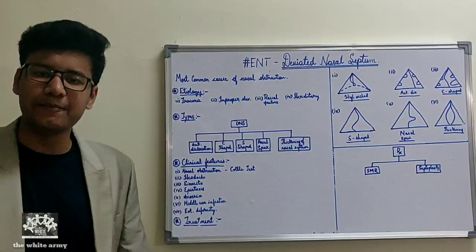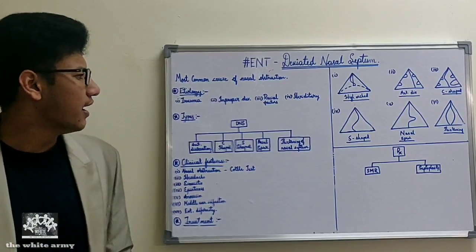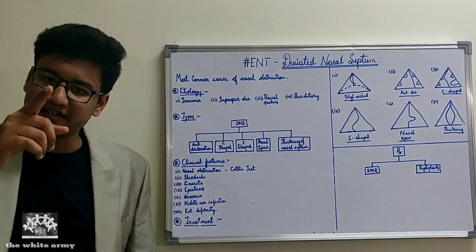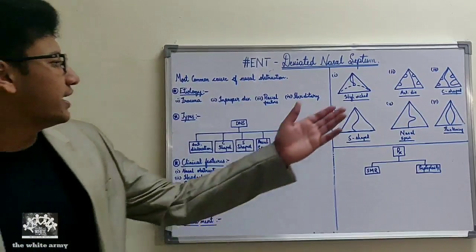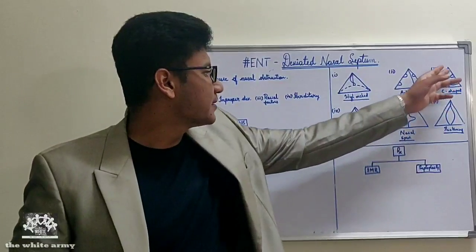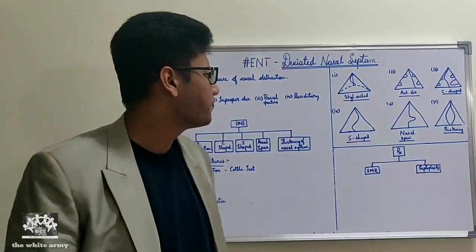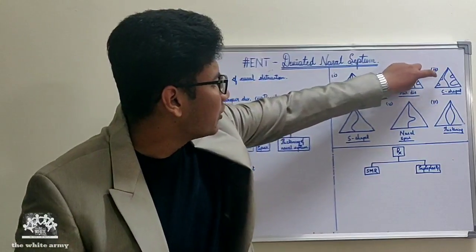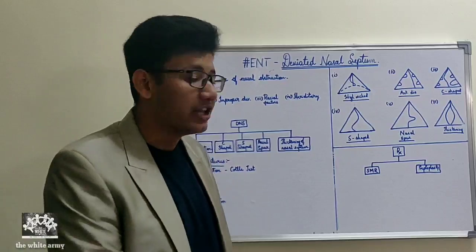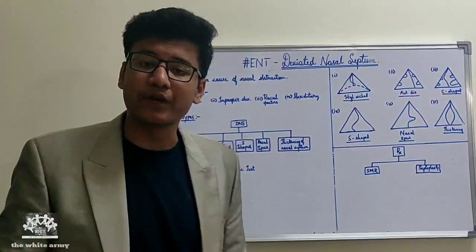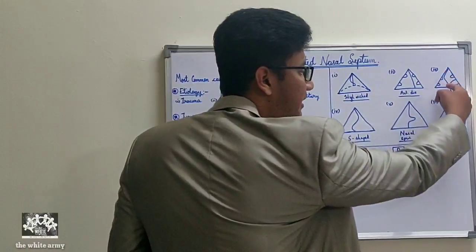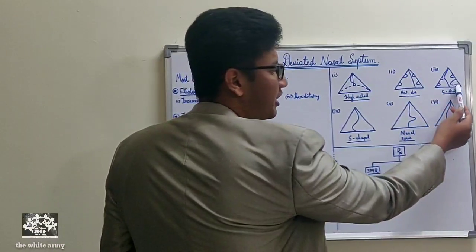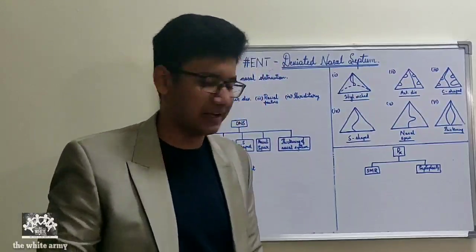In C-shaped deflection, as the name suggests, the deviated part of the nasal septum takes a C-shape. It deviates to only one side of the nasal vestibule, causing compensatory hypertrophy of the middle turbinate on the concave side of the deviation. As shown in the diagram, hypertrophy of the middle turbinate is evident.